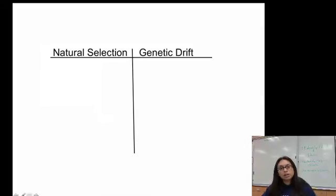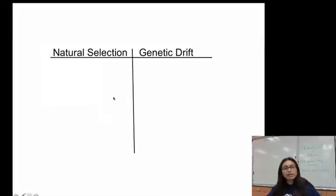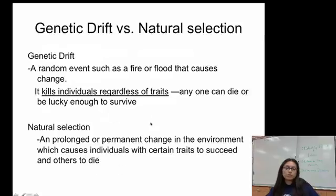Alright, so what you're going to do is write a t-chart and compare natural selection to genetic drift. First, list similarities — for example, they both cause change. Then come up with a few more similarities. Under that, list differences. For natural selection, you might say it takes a long time, while genetic drift can cause change very fast, and compare them side by side. There's also a refresher definition of genetic drift versus natural selection that you can use to help fill in your t-chart.